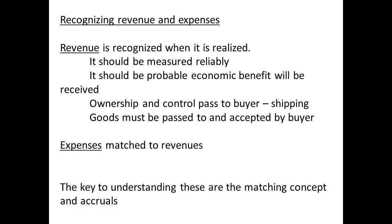So when is a sale actually made? The guidance is that when ownership and control pass to the buyer, the goods are accepted by the buyer. The goods may have been shipped and are in transit — so who owns them? Ownership is determined under the Sale of Goods Act Section 18 Rule 1: where there is an unconditional contract for the sale of specific goods in a deliverable state, the property in the goods passes to the buyer when the contract is made. The Act also defines sale or return conditions, and any other contract should indicate when ownership passes to the buyer.